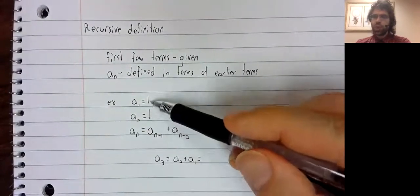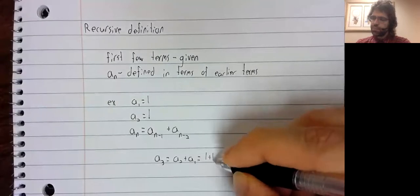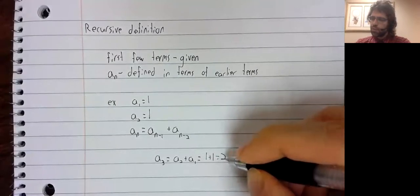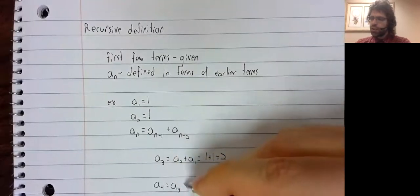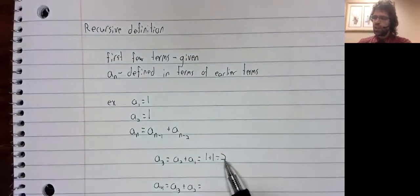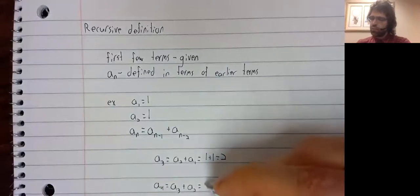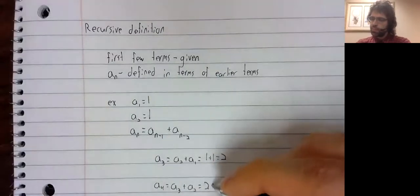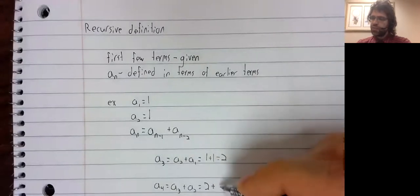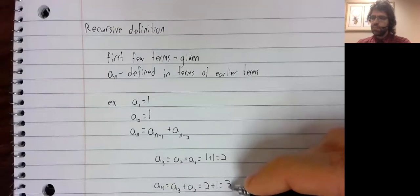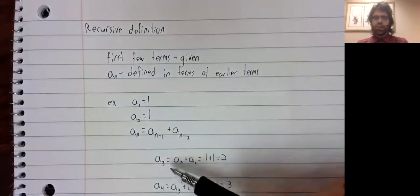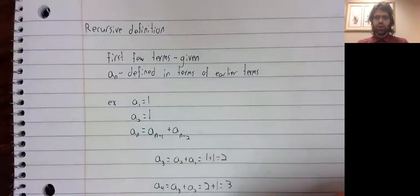And those are both given. And a sub four is a sub three plus a sub two, and a sub three we just found, and a sub two is given. And we can keep building these terms up.